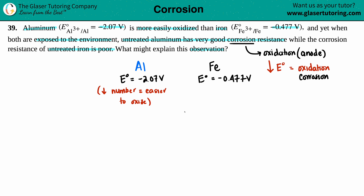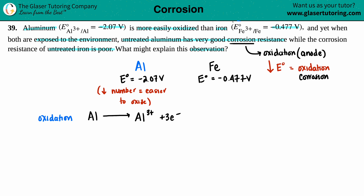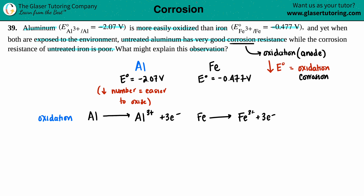Here's the paradox: if aluminum is easier to oxidize, it's going to oxidize faster, and one would think corrosion on aluminum would be much greater. But instead, iron shows much more corrosion. When Al turns into Al³⁺, it loses three electrons — that's the oxidation (corrosion) equation. Similarly, iron also loses three electrons. Both are undergoing oxidation and both could potentially corrode.